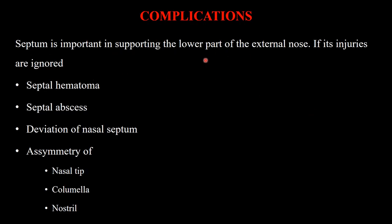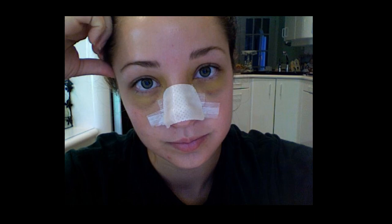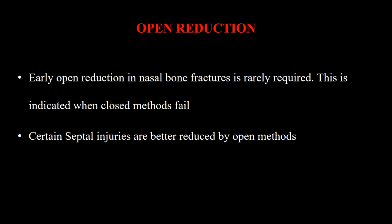Complications: the septum is important in supporting the lower part of the external nose. If injuries are ignored, immediate complications include septal hematoma and septal abscess; later complications include deviation of the nasal septum, asymmetry of the nasal tip, columella, and nostril. After realigning fracture fragments, Steri-Strips and an external splint are applied and retained for 10 to 14 days. Open reduction is rarely required and is indicated when closed methods fail or when there is comminuted or crush injury to the nose.